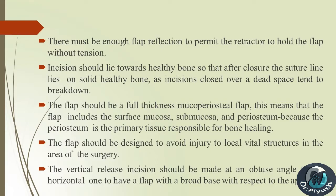The flap should be a full thickness mucoperiosteal flap. This means that the flap includes the surface mucosa, submucosa, and periosteum, because the periosteum is the primary tissue responsible for bone healing. The flap should also be designed to avoid injury to local vital structures in the area of the surgery.